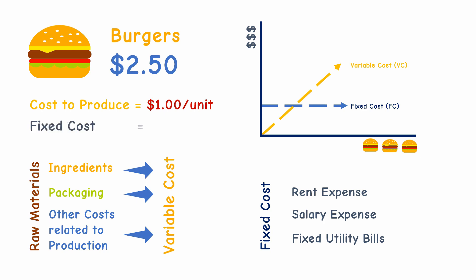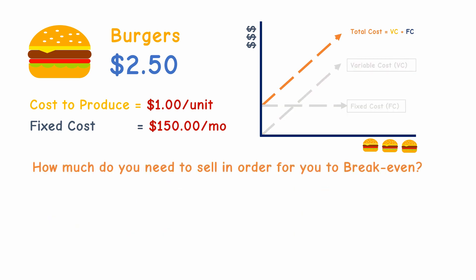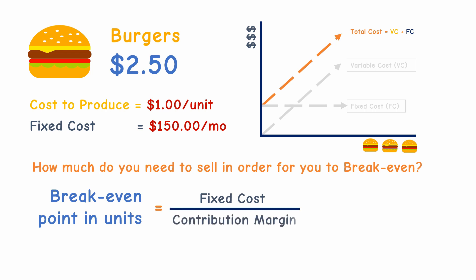Say that your fixed cost in a month is 150 dollars. Now we need to find out how many burgers you need to sell in order to break even. The formula for calculating the break-even point in units is: fixed costs divided by the contribution margin. The contribution margin is the amount left after variable cost is deducted from the selling price — this amount will then contribute to cover or pay for the fixed costs.